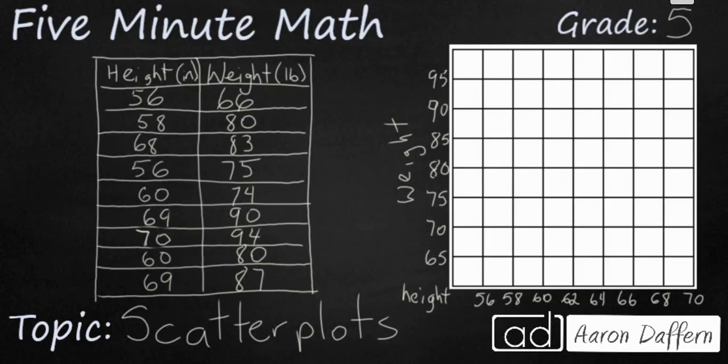Scatter plots are a type of graph that you can create which takes a look at two sets of data and tries to see if there is a relationship. It's going to look similar to a coordinate plane because you have two different coordinates. In this case we are looking at the height and the weight and we are going to plot those coordinates as if they were x and y coordinates.